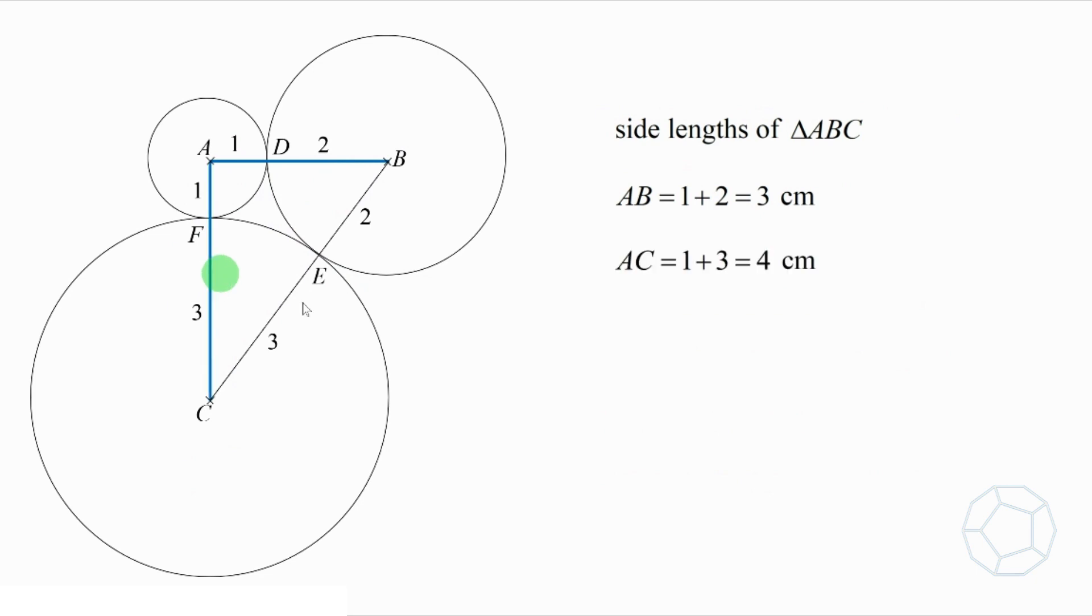And BC is equal to 2 plus 3, which is 5cm. What's so special about the lengths 3, 4, and 5? Well, probably you might notice that is the famous right-angled triangle. Let's prove it quickly.